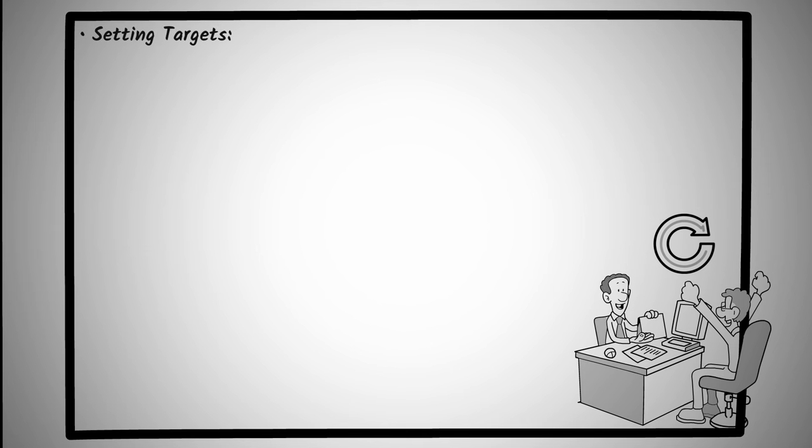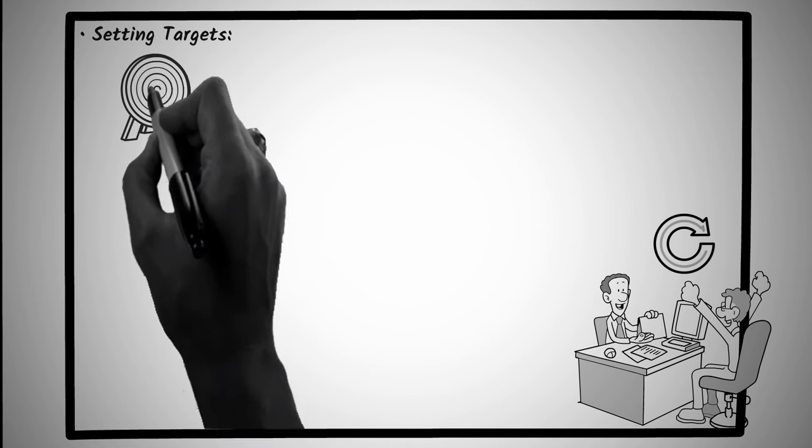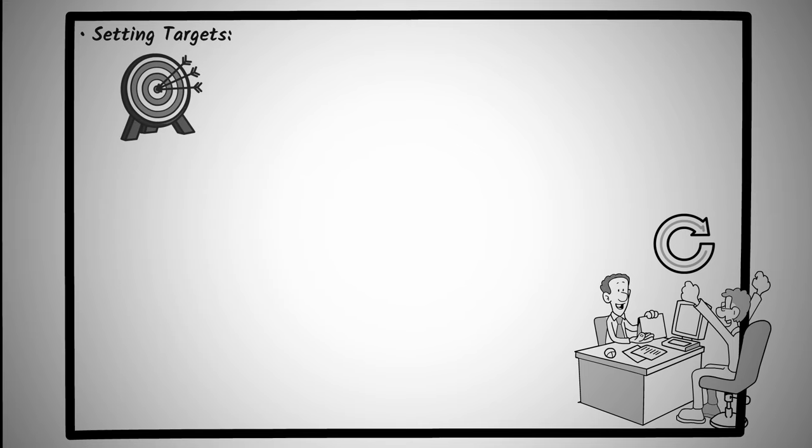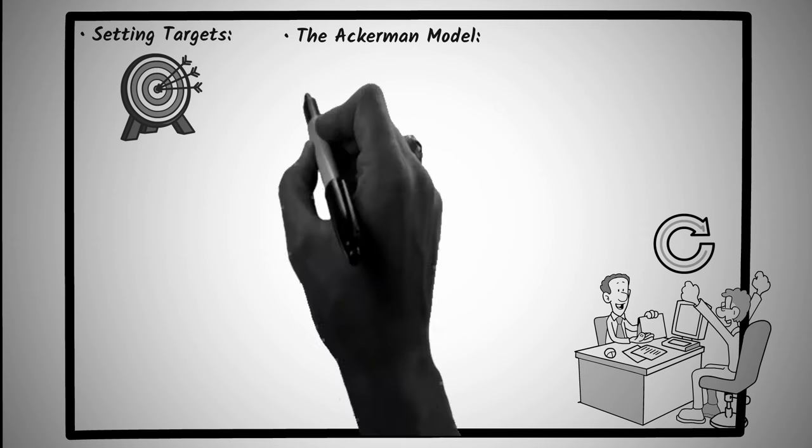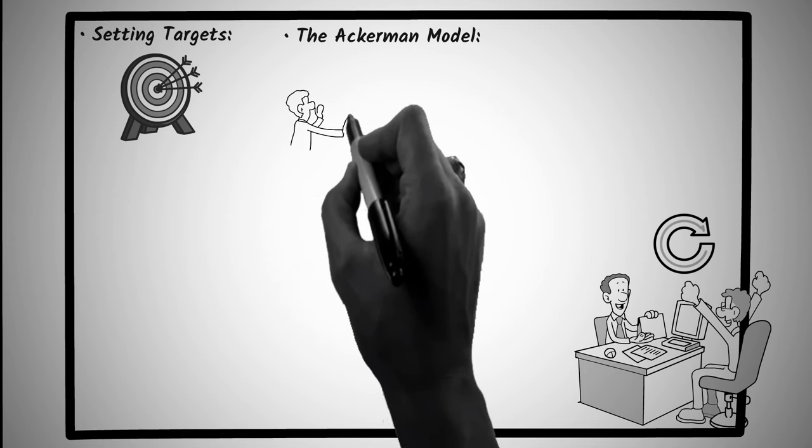Setting targets. Before diving into the thick of negotiation, it's paramount to set clear targets. Knowing your desired outcome, the ideal price or term, gives you a north star to guide you through the negotiation process. And with this clarity, you'll determine your initial offer, one that's aggressive enough to set the tone. The Ackerman model. An advanced bargaining method derived from the high risk world of hostage negotiation, the Ackerman model offers a structured way to methodically reduce the other party's demands.